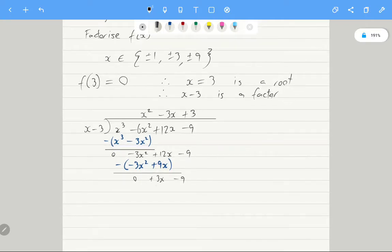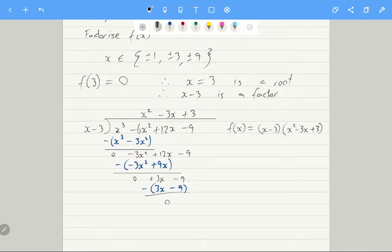So the remainder is 3. And we can see that we get 3x minus 9. We'll multiply 3. And so it all works out. We get no remainder, which means we've done it all correctly. So our factorized form is now. So there's our factorized form of the cubic.